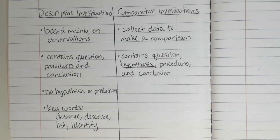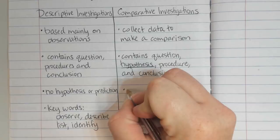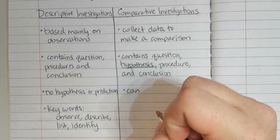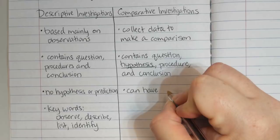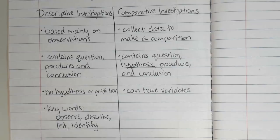It also can have variables. We'll talk more about variables in Pit Stop B of Stop 1 on page nine, but know that comparative investigations can have variables. Variables are the things that are changed in an experiment or that can be changed, so occasionally there can be comparative investigations that have variables.